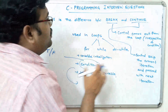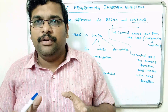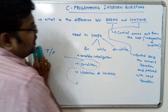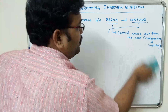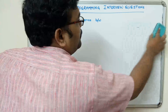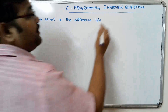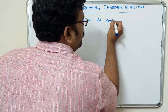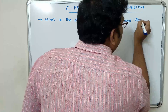So if the control executes break, the control comes out from the loop; if the control executes continue, it skips the current iteration and proceeds with the next. Hope you understood this difference between break and continue. Coming to the second question: what is the difference between variable and array?